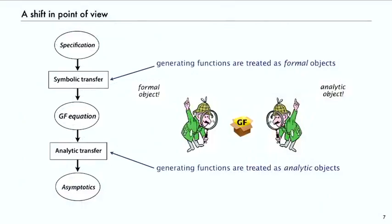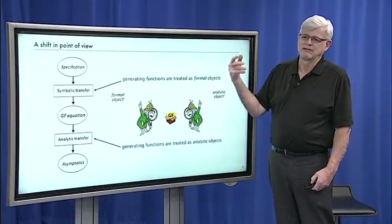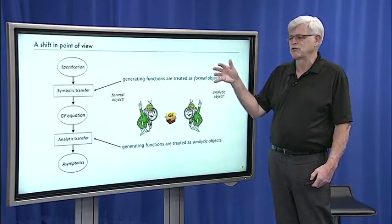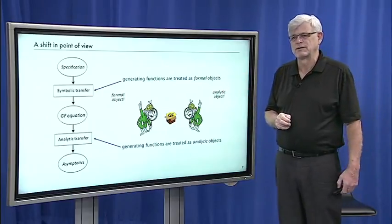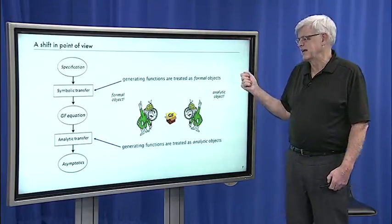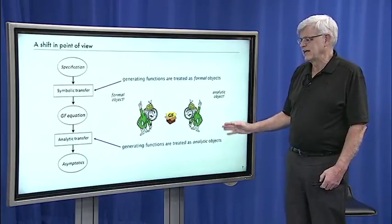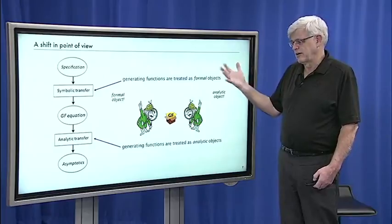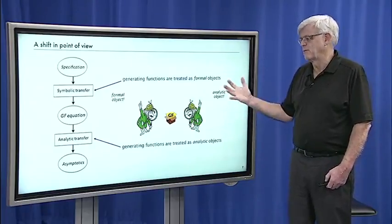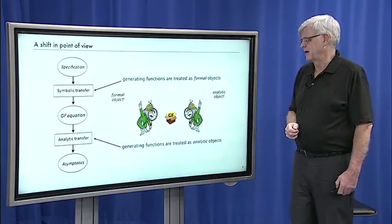This represents a profound shift in point of view. In the first part of the course we were treating generating functions as formal objects — it was all about symbolic manipulations. Starting with George Pólya many decades ago, some mathematicians started to realize that we could also treat generating functions as analytic objects, a completely different point of view. They're the same function, but we need some rigorous justification, and in the end that's how we get our asymptotic results.